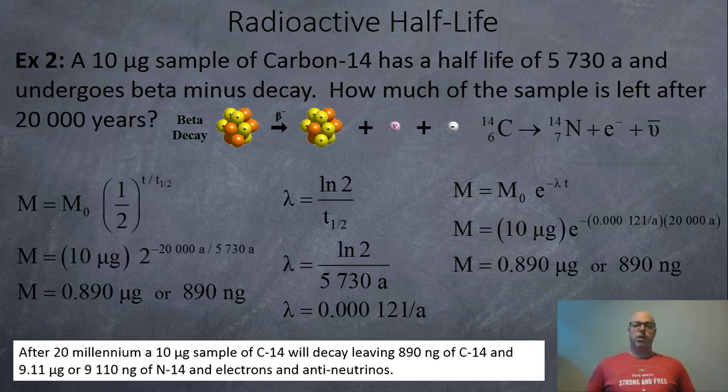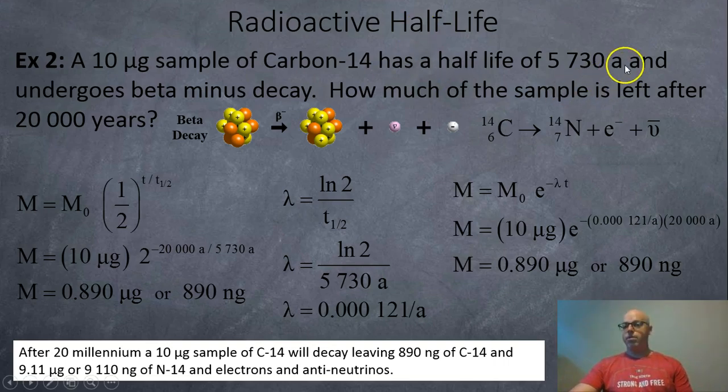So another example with a beta decay this time. So you got a 10 microgram sample of carbon-14, which is used for carbon dating when they try to find out how long ago a tree died or a saber-toothed tiger or something like that. So you take the half-life of 5730 A for annum for years, and it undergoes beta minus decay.